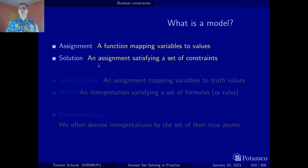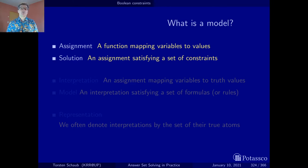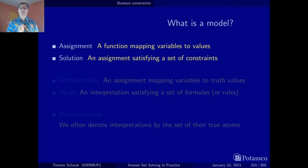The idea now is that we want to find assignments that represent stable models, and to this end we have to identify the constraints that these assignments must satisfy. Of course we have the explicit constraints — the rules in the program — but we've already seen that these provide only sufficient conditions and give us the models of the program. In addition, we must satisfy the necessary conditions: we have to make sure that no subset is unfounded and that each subset has an external support to be part of the solution.